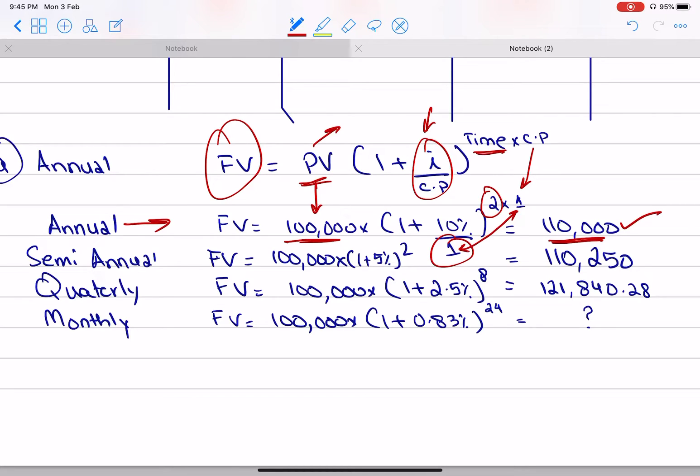In the same way, 10% will be converted. What will happen? 5%. For every year, I'm going to get 2 returns. So this will be 2 multiplied by 2, which is 4. The answer will be different. This will be recalculated.